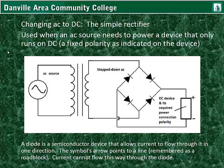Modern electronic devices such as computers, televisions, radios, and even cell phone chargers cannot run on alternating current. Devices that can run on alternating current would include toasters, electric ovens, and refrigerators.